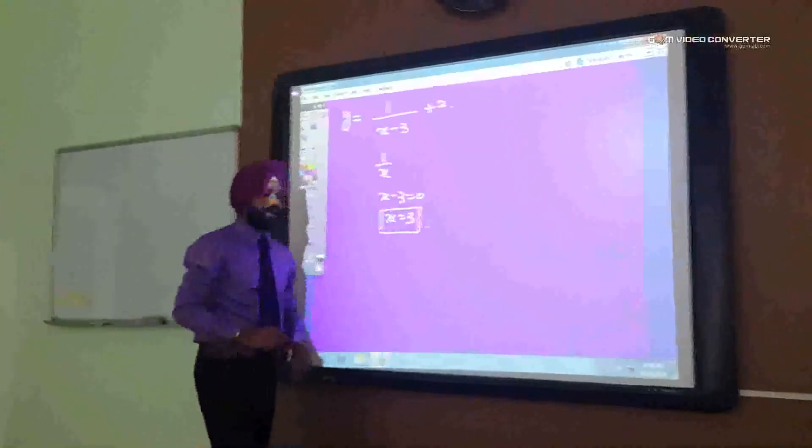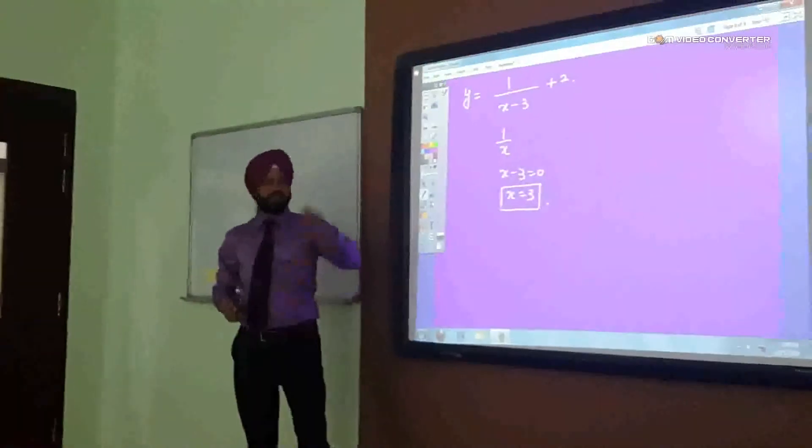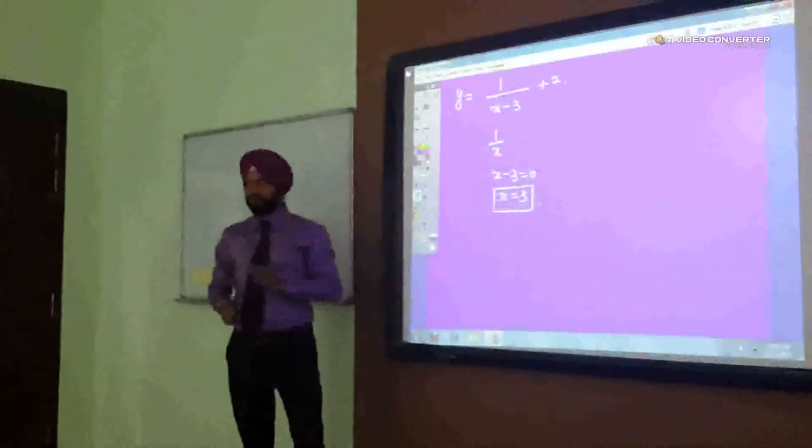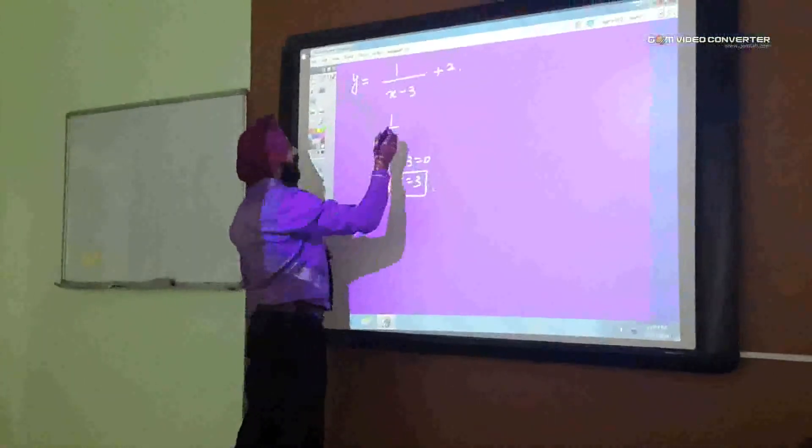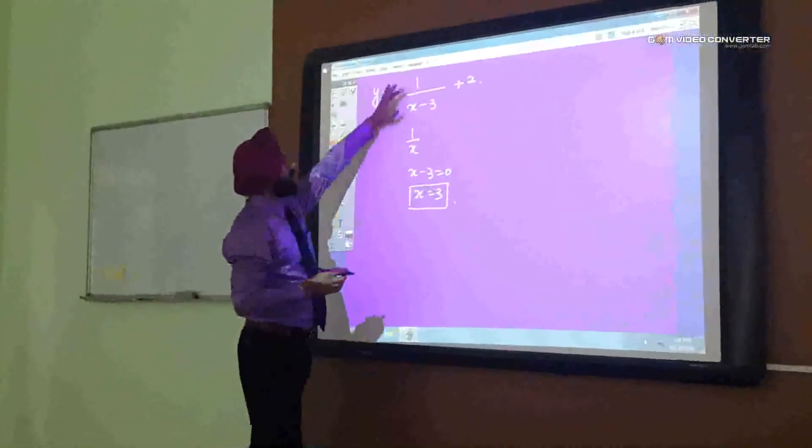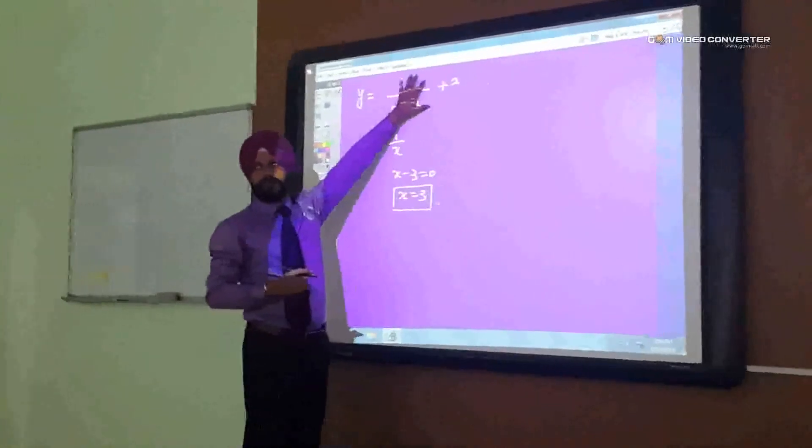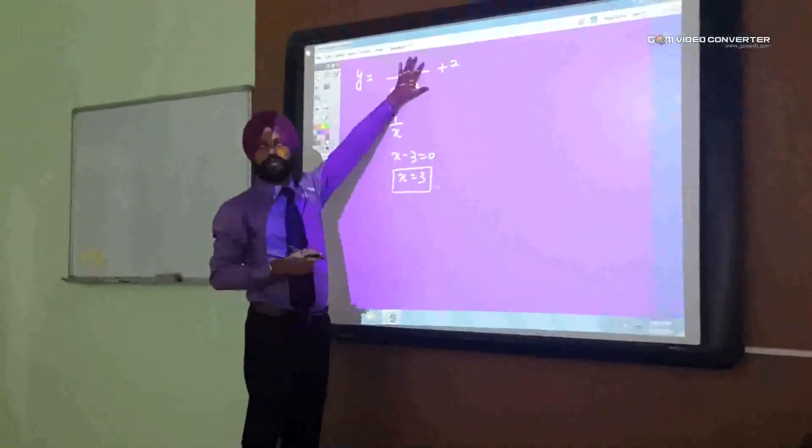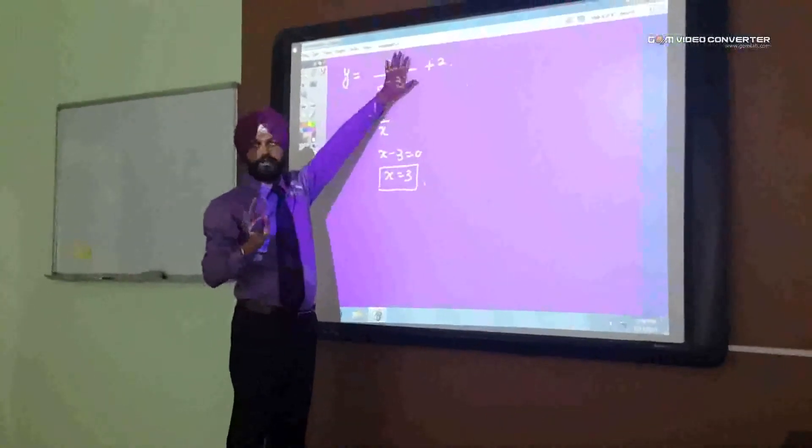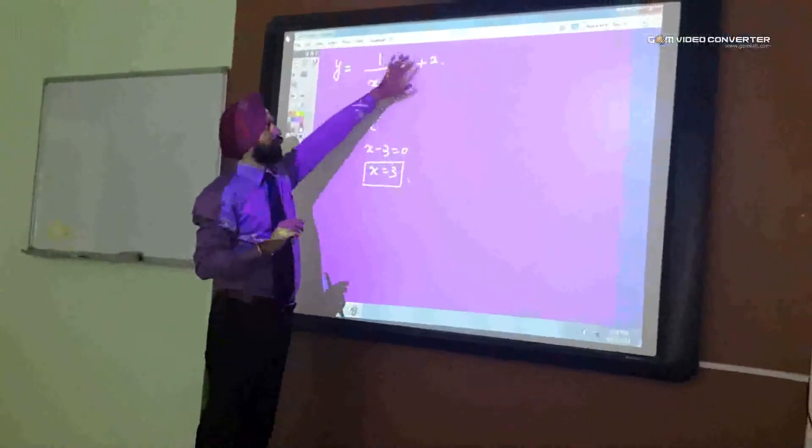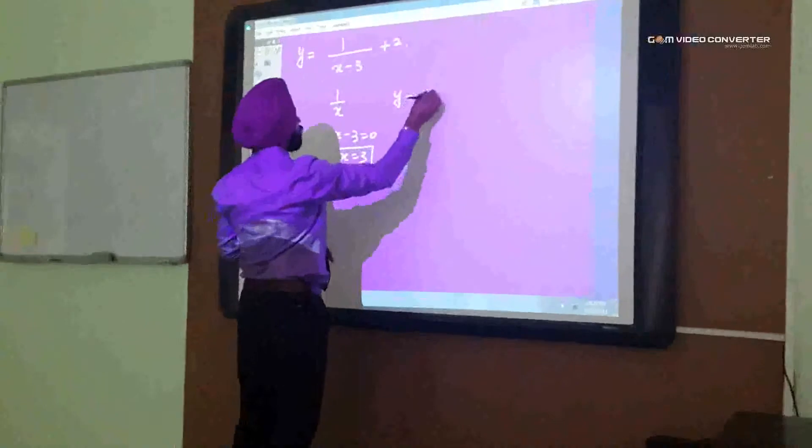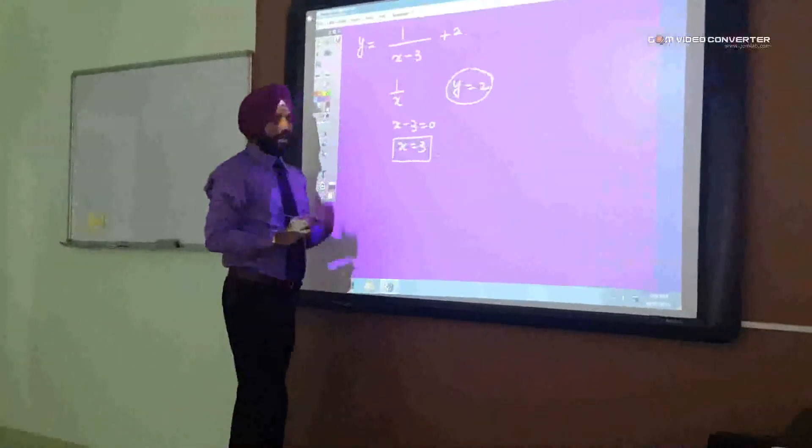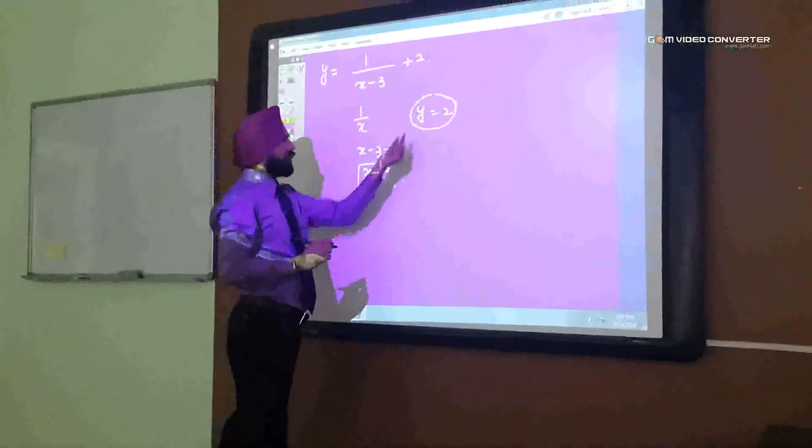Now I already calculated the asymptote vertical asymptote. Now let's calculate horizontal asymptote. How to find actually you should know this number what is the minimum value of this number. Minimum value of any number it is 0, it cannot be negative. Okay, so 0 plus 2 it is plus 2 so y is equals to 2.